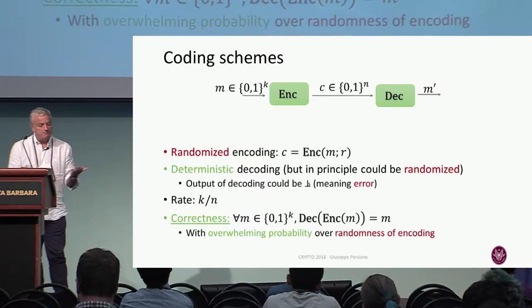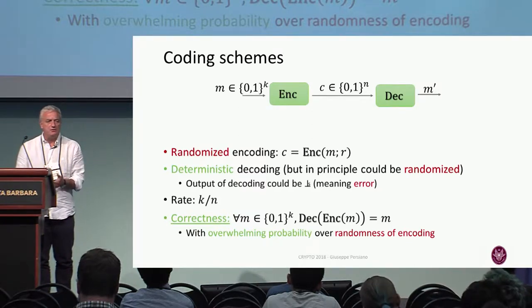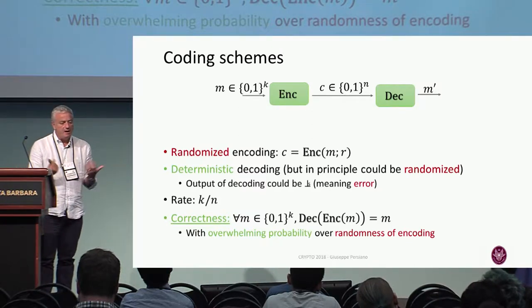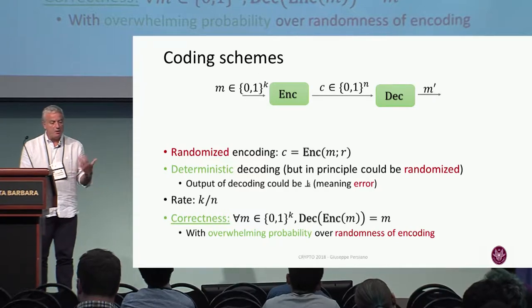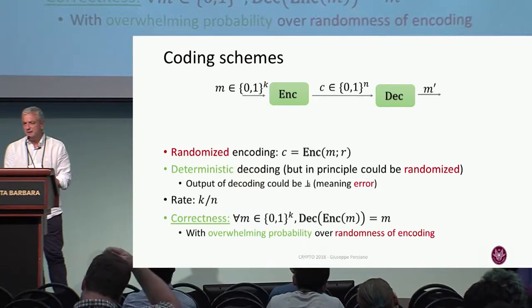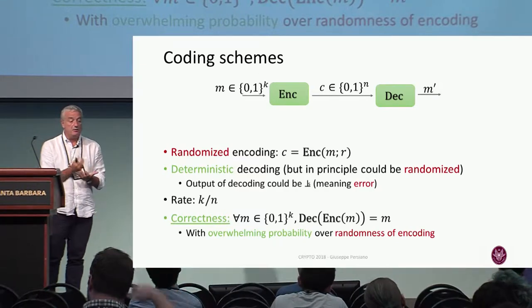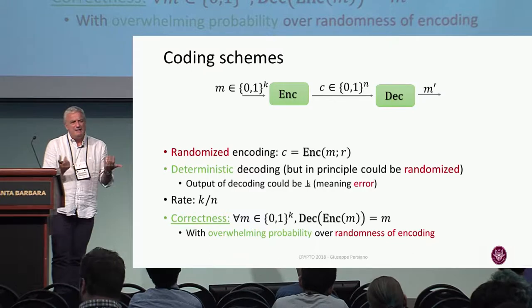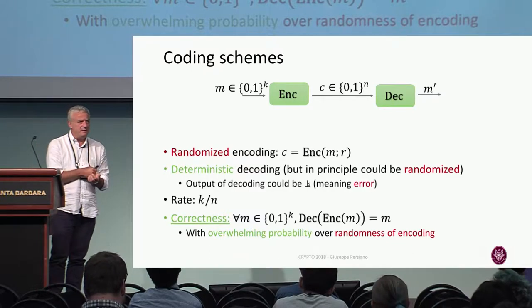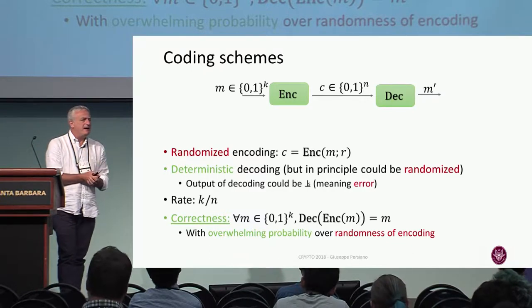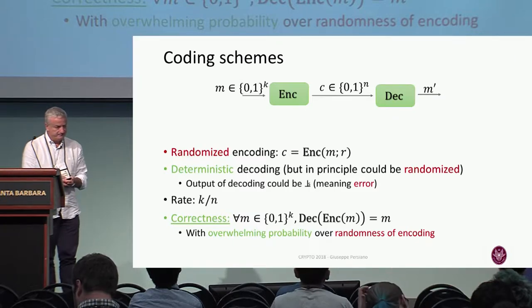Correctness: if you encode M and then decode, you get the same thing with overwhelming probability over the random coins of the encoding algorithm. The decoding algorithm could in principle be randomized as well, but typically it's deterministic.